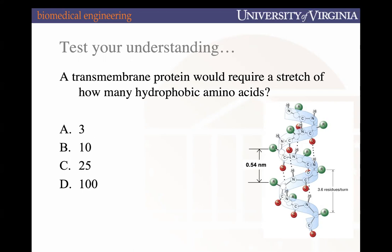For transmembrane proteins, the part that goes across the membrane is an alpha helix — that's its secondary structure.